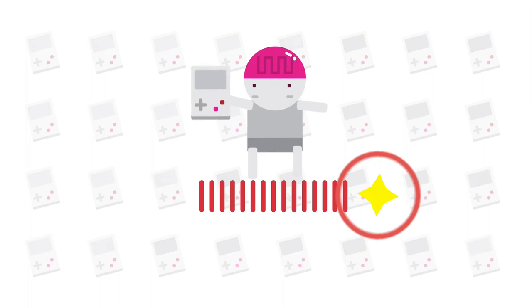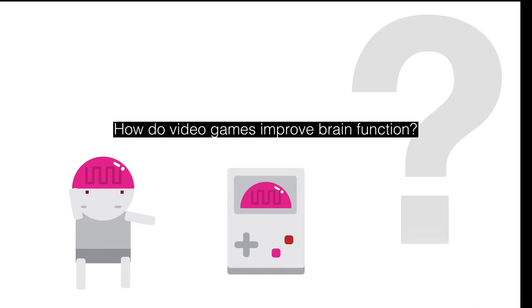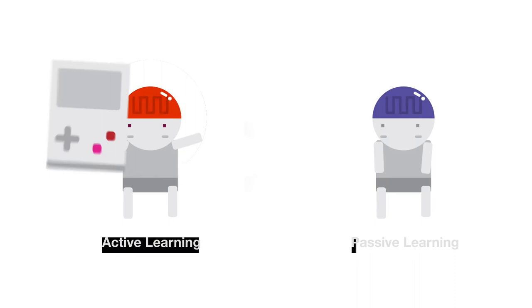Video games nowadays are so popular that scientists became interested in how video games may alter the human brain and human behavior. So, how come video games can be effective in improving our brain function?